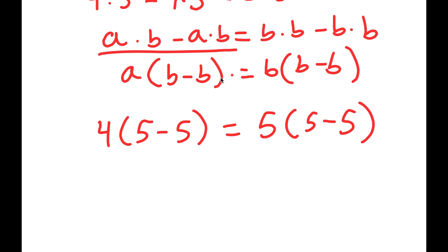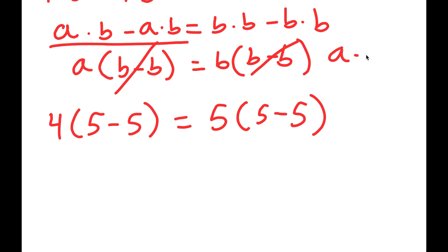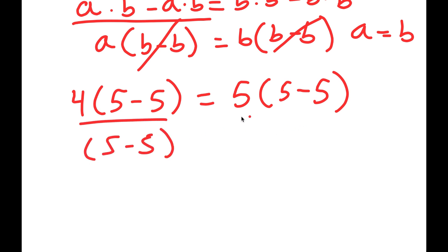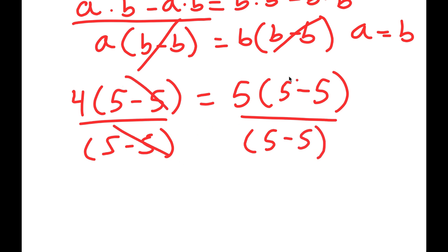What we can do here is, if I have something in the form a times (b minus b) is equal to b times (b minus b), notice how we can just cancel these out, meaning that a is equal to b. So in this case, I have 4 times (5 minus 5) is equal to 5 times (5 minus 5). We can divide both sides by (5 minus 5), these two cancel out, these two cancel out, and I'm left with 4 is equal to 5.